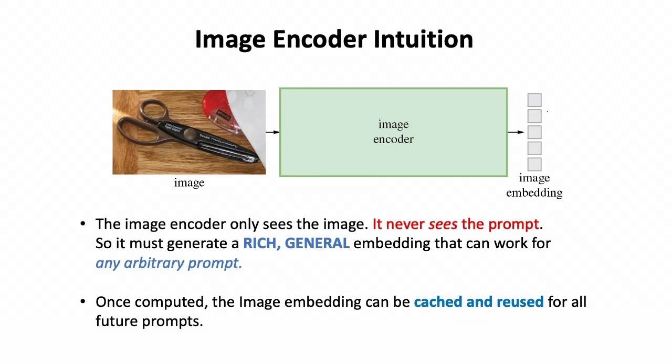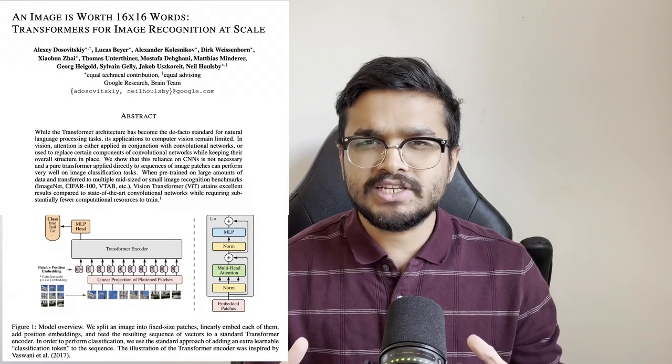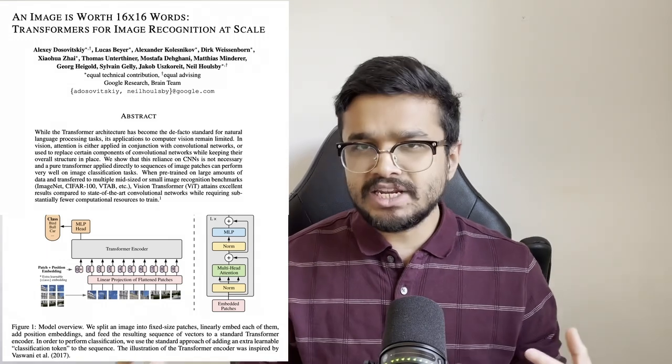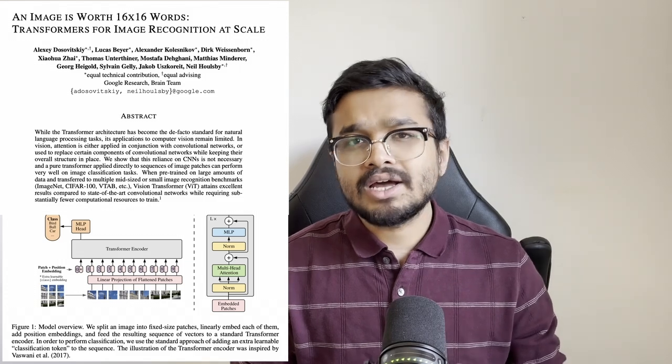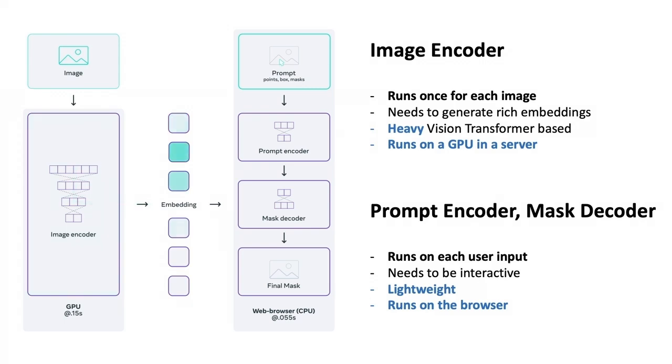Second, since the image embeddings are going to be the same for each prompt we can pre-compute them at the start when a new image is loaded and cache it and just keep reusing it for all types of future user prompts. The ability to cache image embeddings is a game changer. The authors use a very heavy vision transformer based image encoder containing hundreds of millions of parameters that they run on a cloud-based GPU server every time a new image is loaded, while the rest of the architecture are all relatively smaller networks that need to run at interactive latency for every user input and they can just run in the browser and keep reusing the cached image embeddings. Smart.